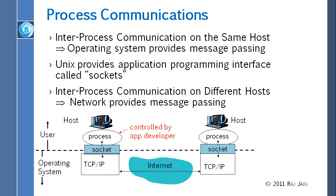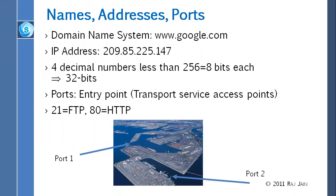Whenever we use the word socket, basically it is the operating system interface for process-to-process communication. Then we use names. We have already talked about names and addresses. Every computer has an address and every computer could have a name — it doesn't have to have a name. We can use DNS to translate the name into an address. There are DNS servers — domain name servers — to which you give the name and you get the address, which is what you actually need to reach a destination.